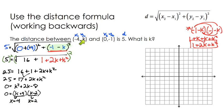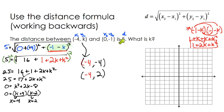So we have k equals negative 4 and k equals 2. Since k is the y-coordinate of this point, that would mean our answer is the ordered pair negative 4, negative 4, because that could be the y-coordinate, or our solution would be negative 4, 2. You might be wondering which one is correct — which point is a distance of 5 away. Let's look at this graphically. Long story short: they're both answers.